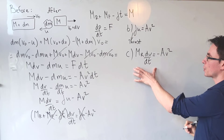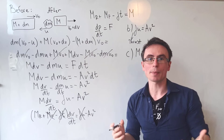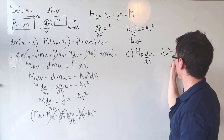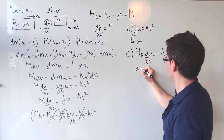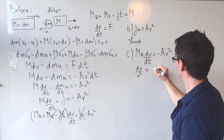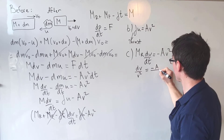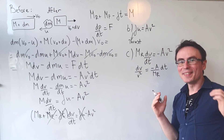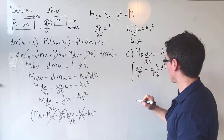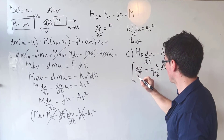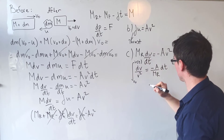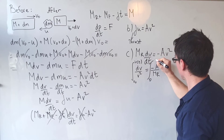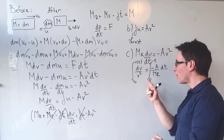This is a differential equation we can easily separate. Bringing everything with v to the left-hand side, we get dv/v² = -(a/m_R)·dt, where a/m_R are just constants. We integrate both sides: the left side from v₀ to v(t), and the right side from t = 0 to some time t.